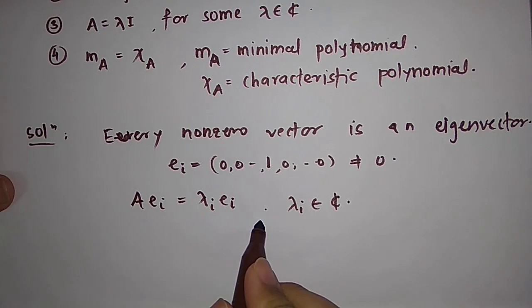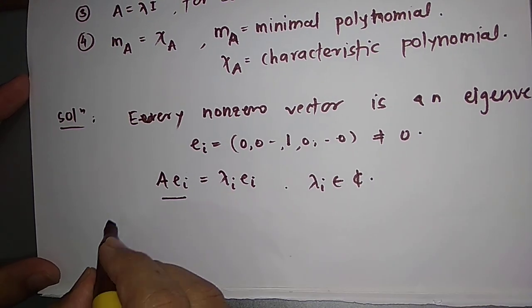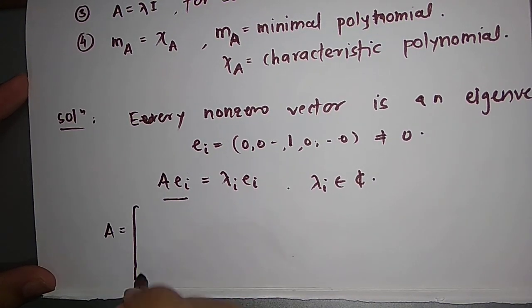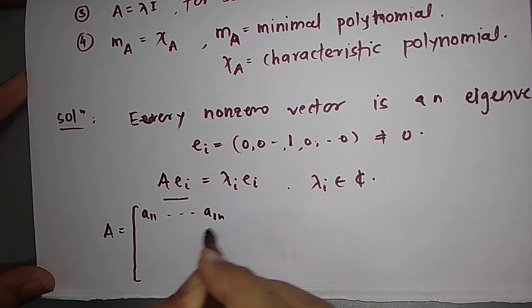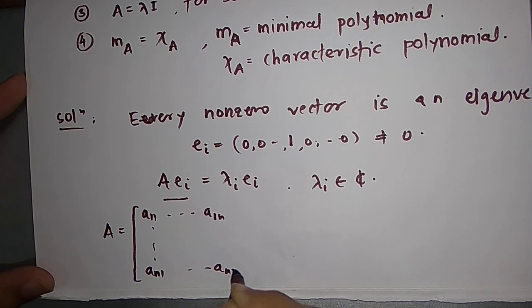So that means A e_i is equal to some λ_i e_i and λ_i belongs to the complex number. So what does that mean? A e_i, now suppose you have A matrix, which is like this, A_11, like this, A_1N, A_N1 and A_NN.